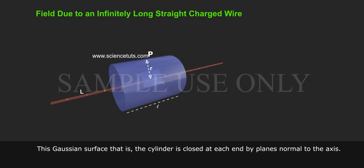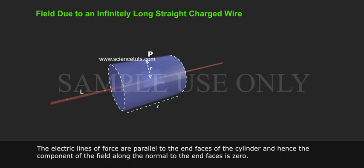This Gaussian surface, that is, the cylinder, is closed at each end by planes normal to the axis. The electric lines of force are parallel to the end phases of the cylinder and hence the component of the field along the normal to the end phases is zero.